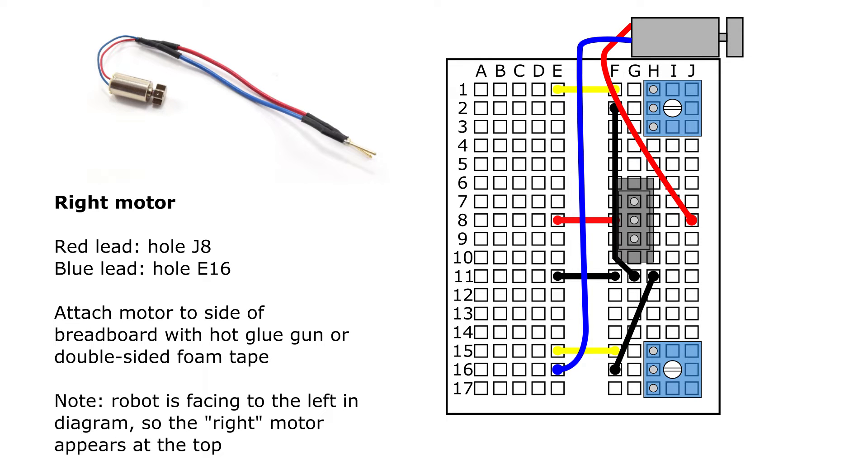Next, you're going to connect the first motor. So this is the right motor, because in this diagram, the robot is facing to the left. So even though the motor appears on the top of the diagram when the robot is driving forward, this motor will be on the right. You're going to attach the motor to the side of the robot with either a glue gun or double-sided foam tape. Make sure the little weight on the end of the motor is free to spin. You don't accidentally want to tape or glue that in place. And then connect the red lead to hole J8 and the blue lead to hole E16.